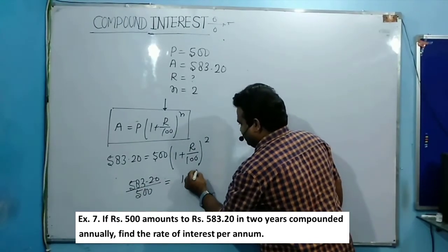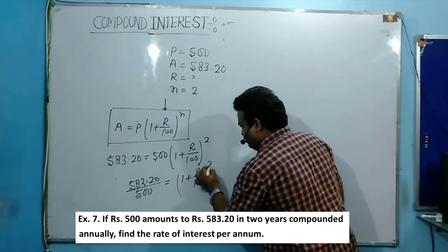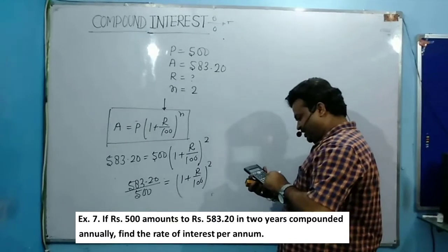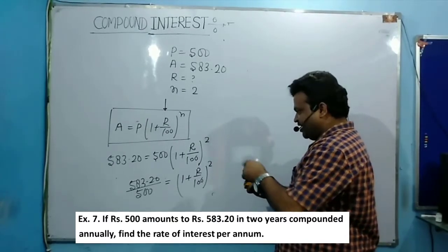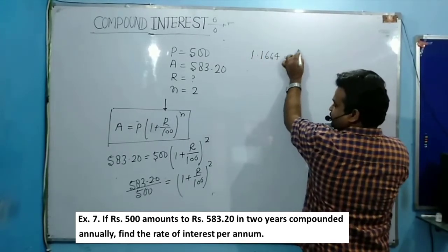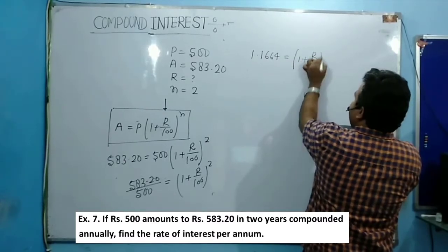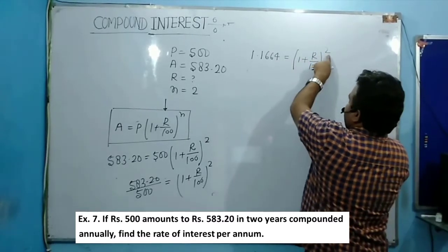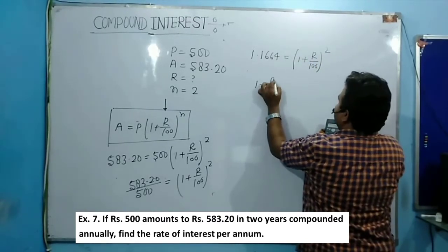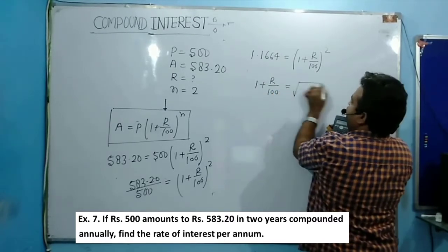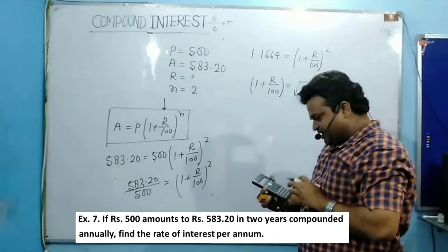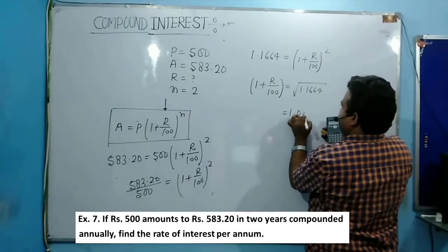Dividing 583.20 by 500 gives 1.1664. So (1 + r/100)² = 1.1664. Now take the square root of both sides. The square root of 1.1664 gives 1.08. Therefore 1 + r/100 = 1.08.